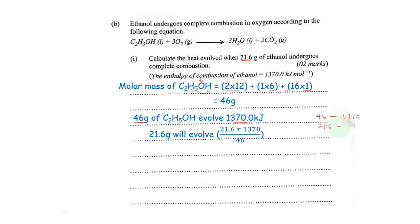Our x will be 21.6 times 1370 divided by 46. So we shall have 643.3 kilojoules being evolved. So that would be the heat that can be evolved when 21.6 grams of ethanol undergoes complete combustion.